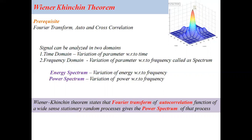Hopefully, in temporal characteristics of signal analysis, you have studied about auto and cross correlation. For that auto and cross correlation function, if we take the Fourier transform, that gives the power spectrum — that is, the spectral characteristics of a signal. Let us look into the details.